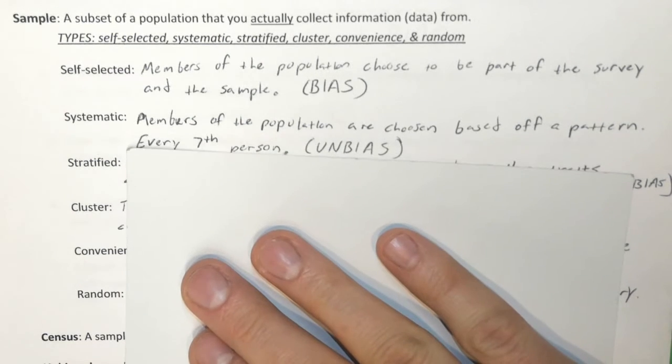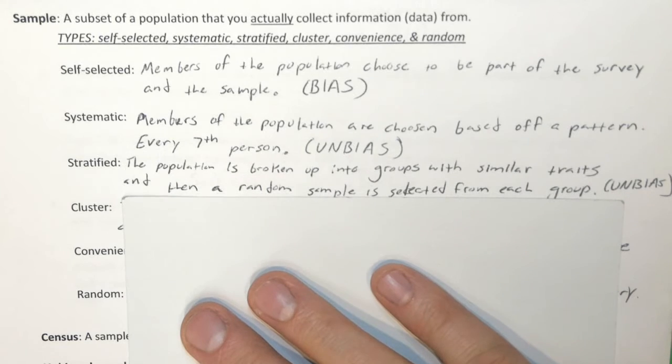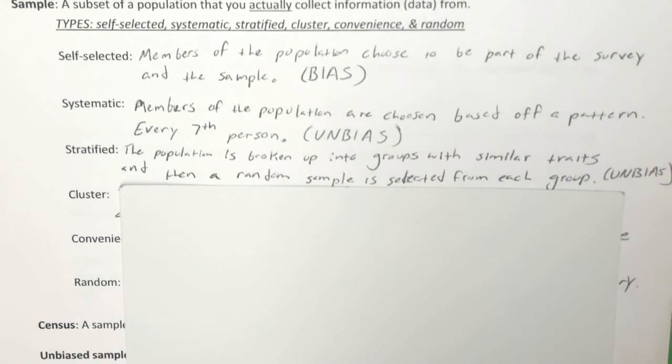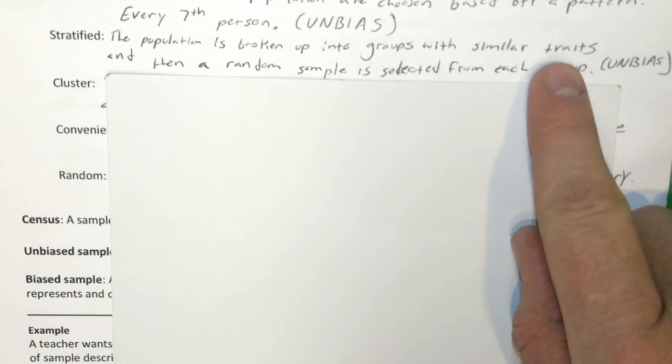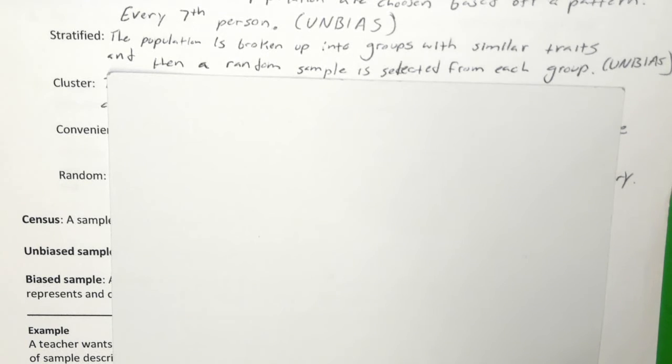Next is stratified. Stratified is a word you may have heard when referring to rocks or stone in a science class. It means a population is broken up into groups based on similar traits, and then a random sample is selected from each group. Some people are selected from the low group, some from the medium group, some from the high group. This is a good sampling technique.